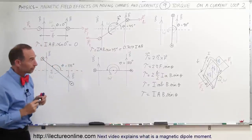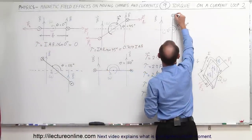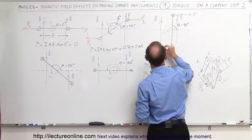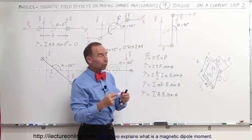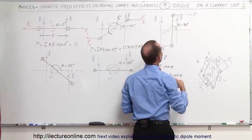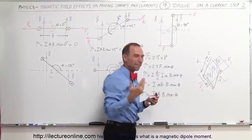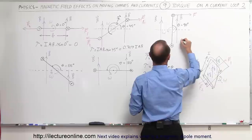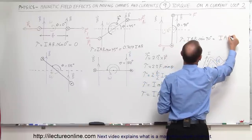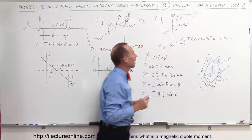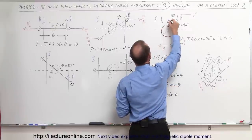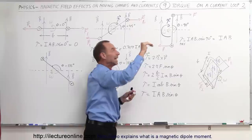At 90 degrees, the force is in this direction on one side and in the opposite direction on the other side. At this point we have the maximum torque — the maximum perpendicular distance from the point of rotation to where the wires are. Therefore the torque equals I·A·B times sine of 90 degrees, which equals one, so torque = I·A·B. That is the maximum torque possible at any point in time. The direction of the torque is still clockwise, meaning it points into the board.